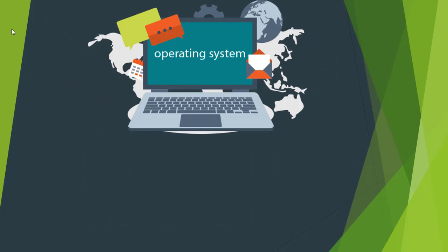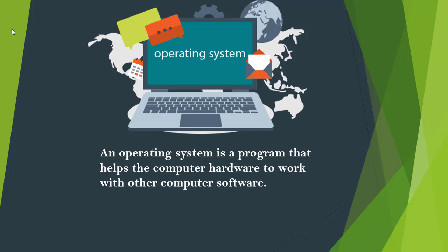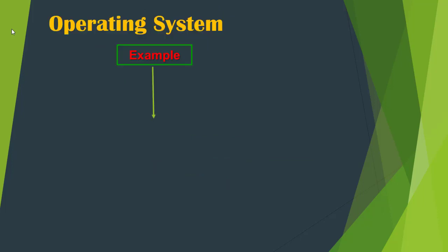Now let's see what is an operating system. An operating system is a program or software that helps computer hardware to work with other computer software. The definition of operating system will be more clear to you when you see this example.